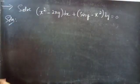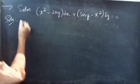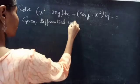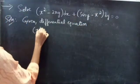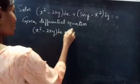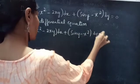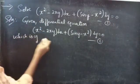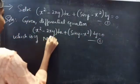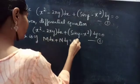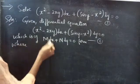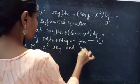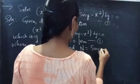Problem: Solve (x squared minus 2xy) dx plus (sin y minus x squared) dy equals to 0. Solution: Given differential equation is (x squared minus 2xy) dx plus (sin y minus x squared) dy equals to 0. Consider it as equation 1, which is of the form mdx plus n dy equals to 0, where by comparing these two equations, we get M equals to x squared minus 2xy and N equals to sin y minus x squared.